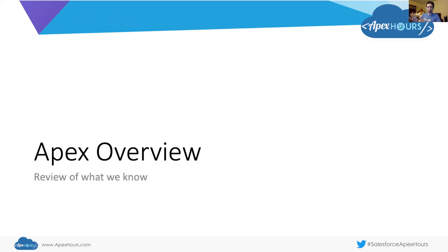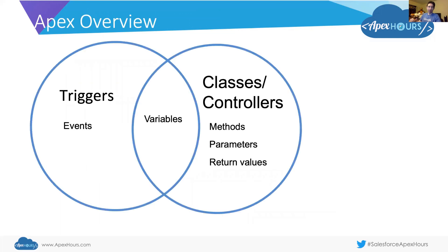Let's start off with a review of what we already know — Apex overview. For the most part, Apex comes in two flavors: you've got your triggers, and you've got your classes and controllers. In your triggers, you have events causing code to fire — your before insert, your after update, these database events happen and your code fires. In your classes and controllers, this is where your methods are, your parameters, your return statements, and variables mixed in there.